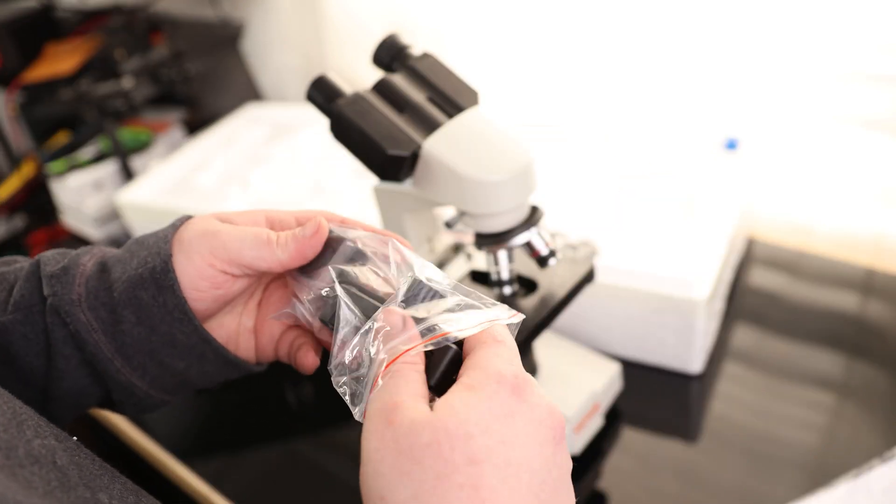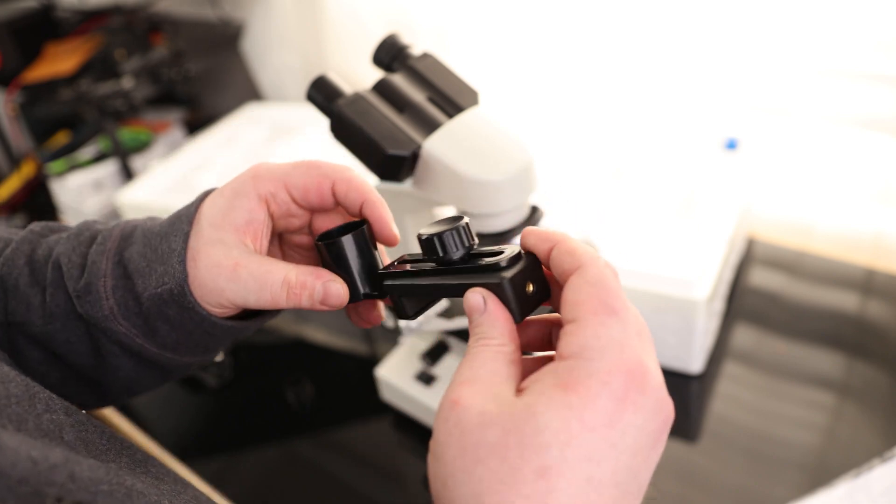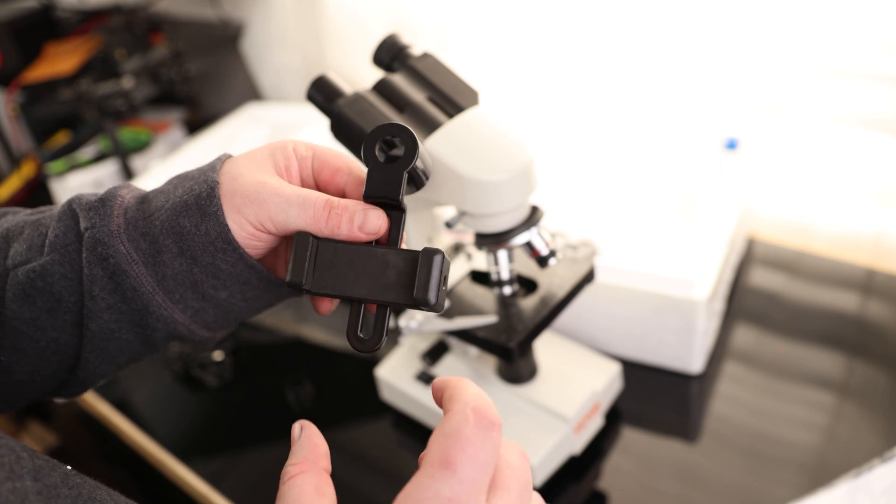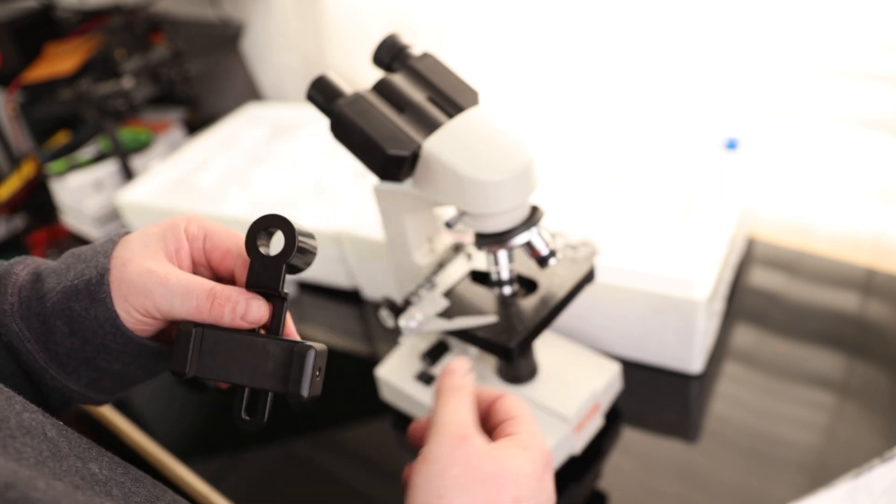And this is something that most microscopes do not come with. So it's pretty cool that this one does. This actually has a cell phone holder. So you can clip your cell phone in here and then attach that to the eye. So that way you can record on your phone what it is you're seeing through the microscope.